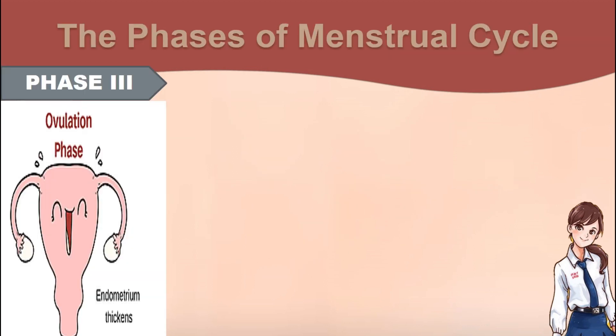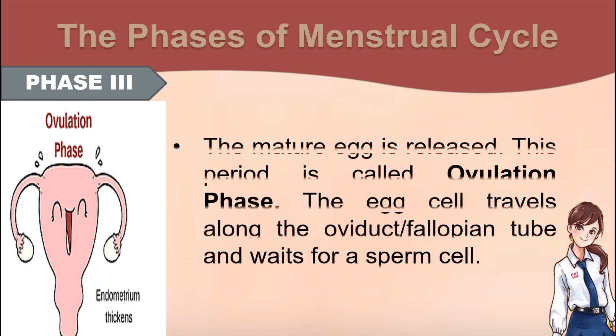Phase 3 – The mature egg is released. This period is called the ovulation phase. The egg cell travels along the oviduct or fallopian tube and waits for the sperm cell.